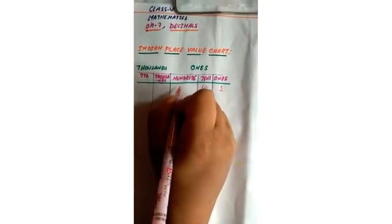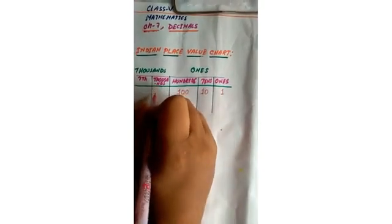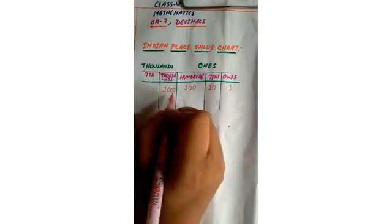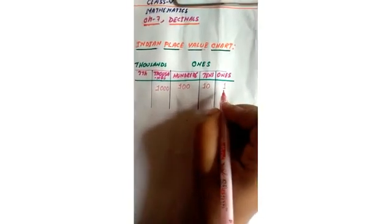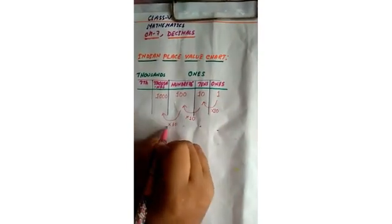Ones means 1, tens means 10, hundreds means 100 (one zero zero). Moving left, thousands is 1000. We can see that one multiplied by ten gives tens, ten multiplied by ten gives hundreds, and hundred multiplied by ten gives one thousand. The values are increasing from right side to left side.